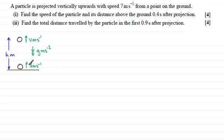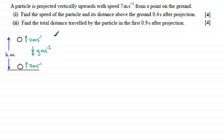We've got our particle initially projected upwards with a speed of 7 metres per second. At t equals 0.4 seconds, let's say it's got a vertical speed of v metres per second upwards. There's the acceleration due to gravity of g metres per second per second acting downwards, and it's moved a height h metres. To find v, I'm going to use one of the equations of motion for constant acceleration — the SUVAT-based equations. Let's mark upwards as positive and put down our letters: S for displacement, U for initial velocity, V for final velocity, A for acceleration, and T for time.